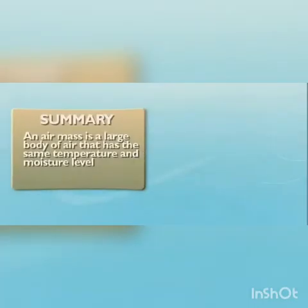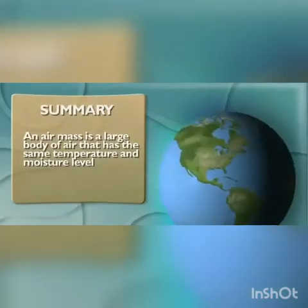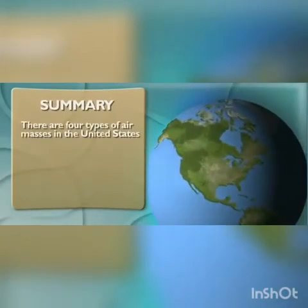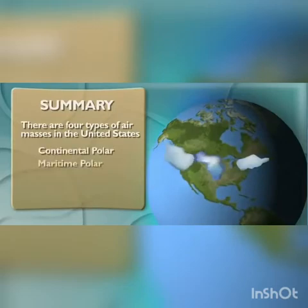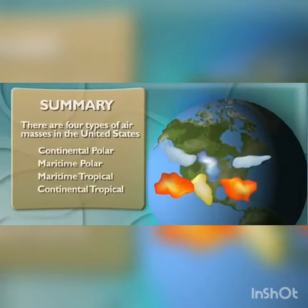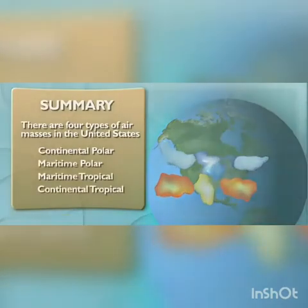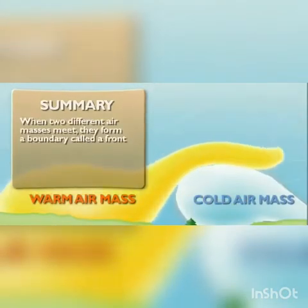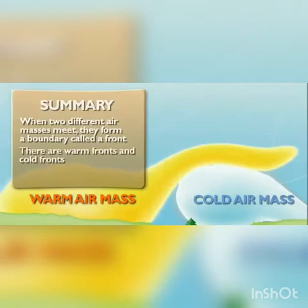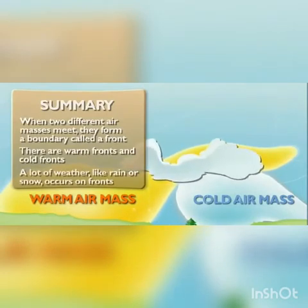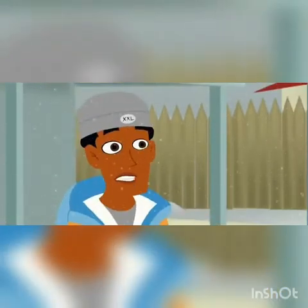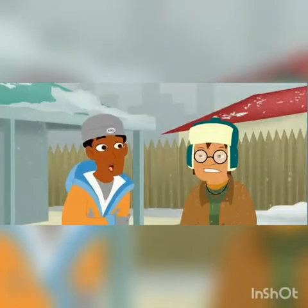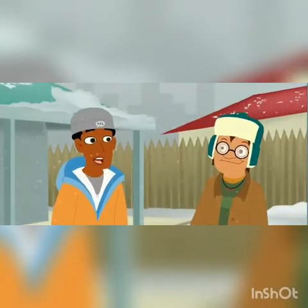An air mass is a large body of air that has the same temperature and moisture throughout, and there are four types of air masses in the U.S. Each one has unique characteristics that hint at where it formed. When two of these air masses meet, they form a boundary called a front. It can be a warm front or a cold front, but either way, some kind of weather always happens on a front.